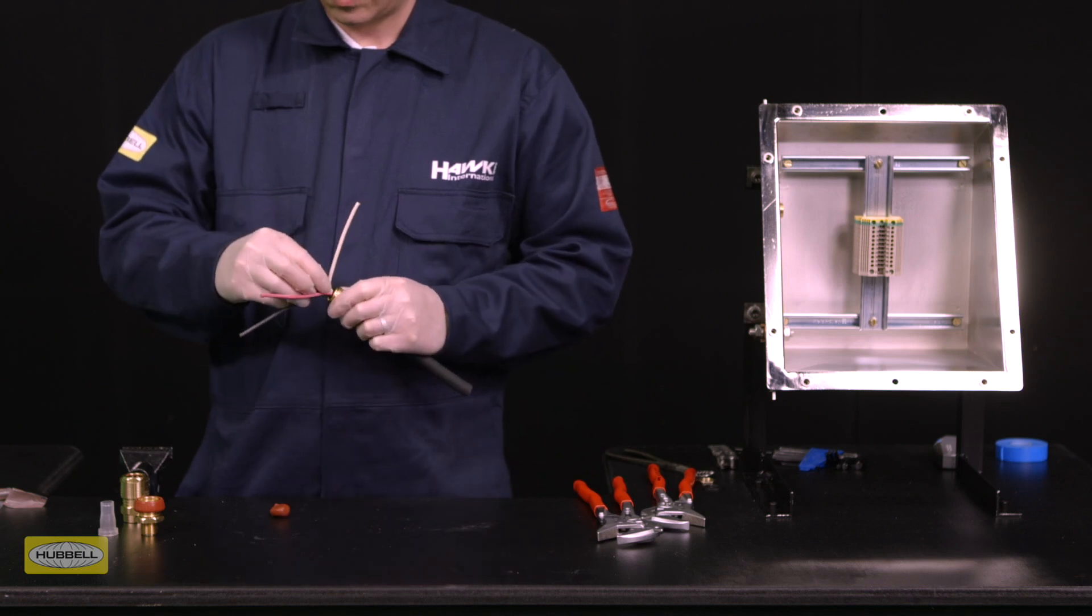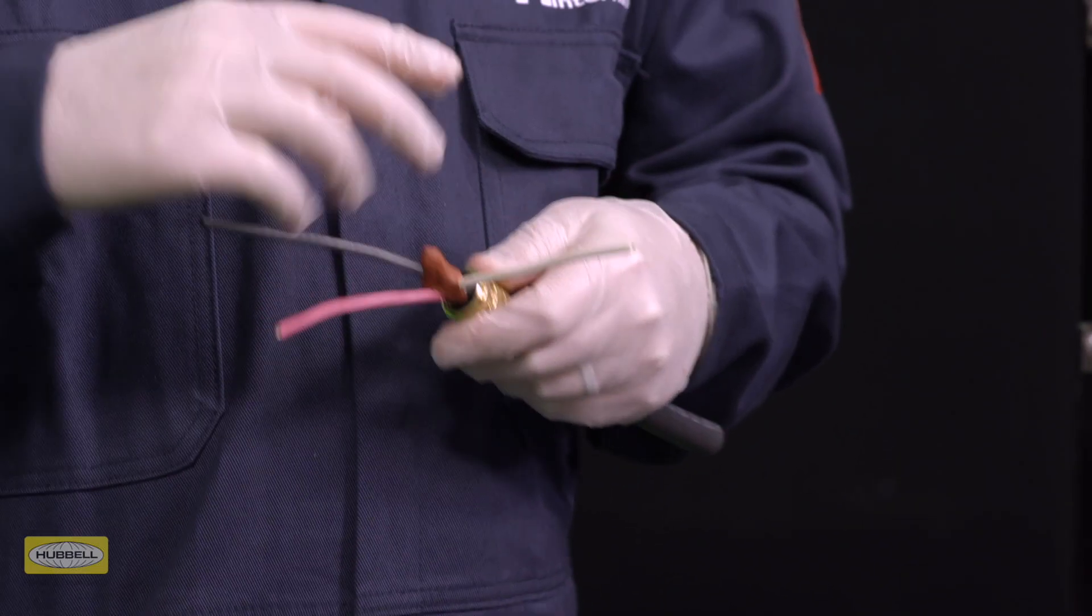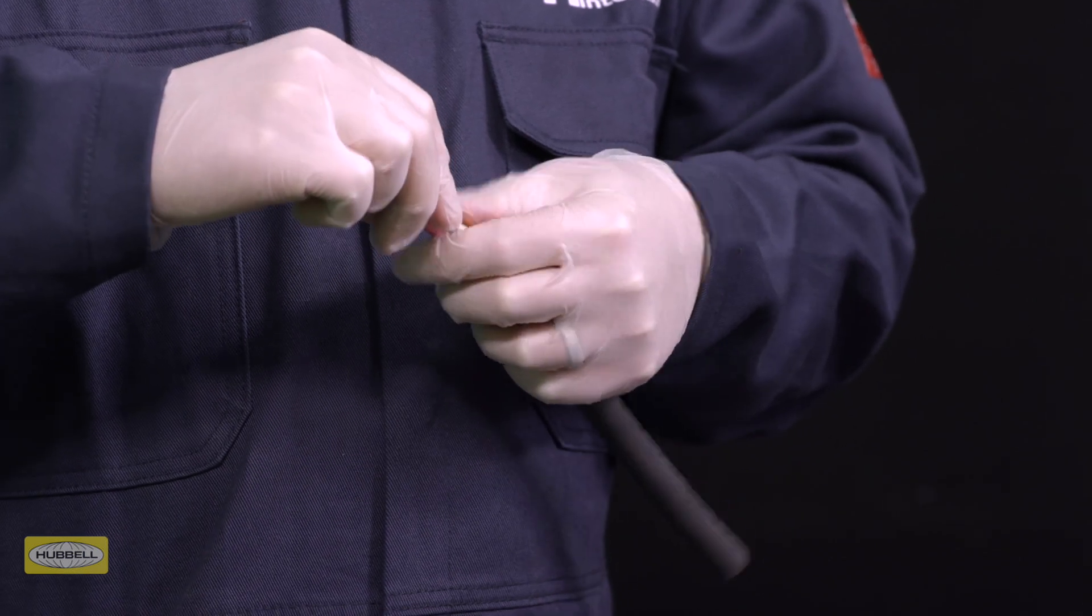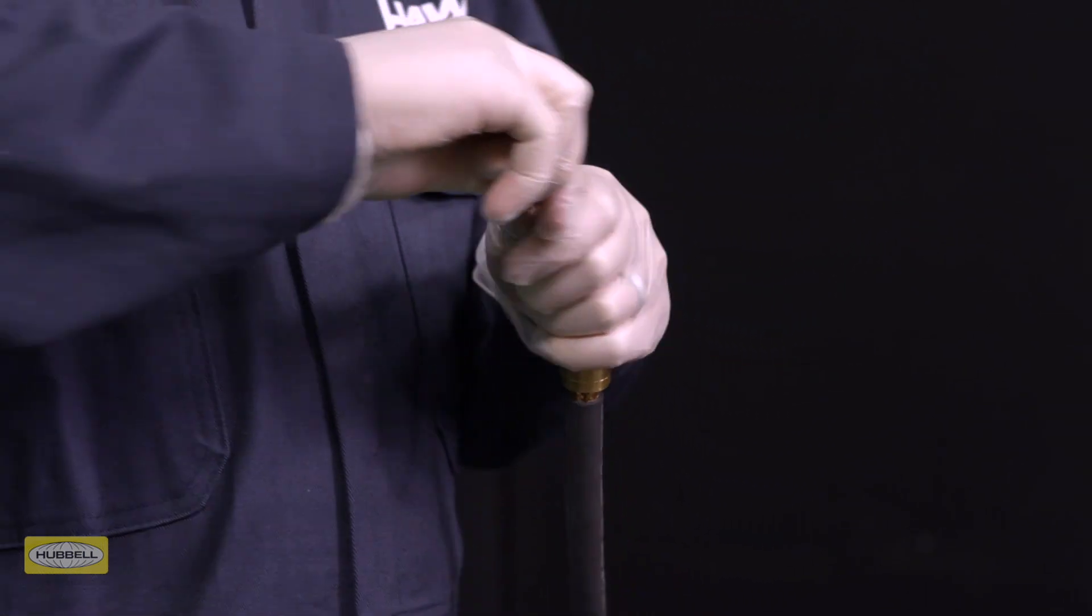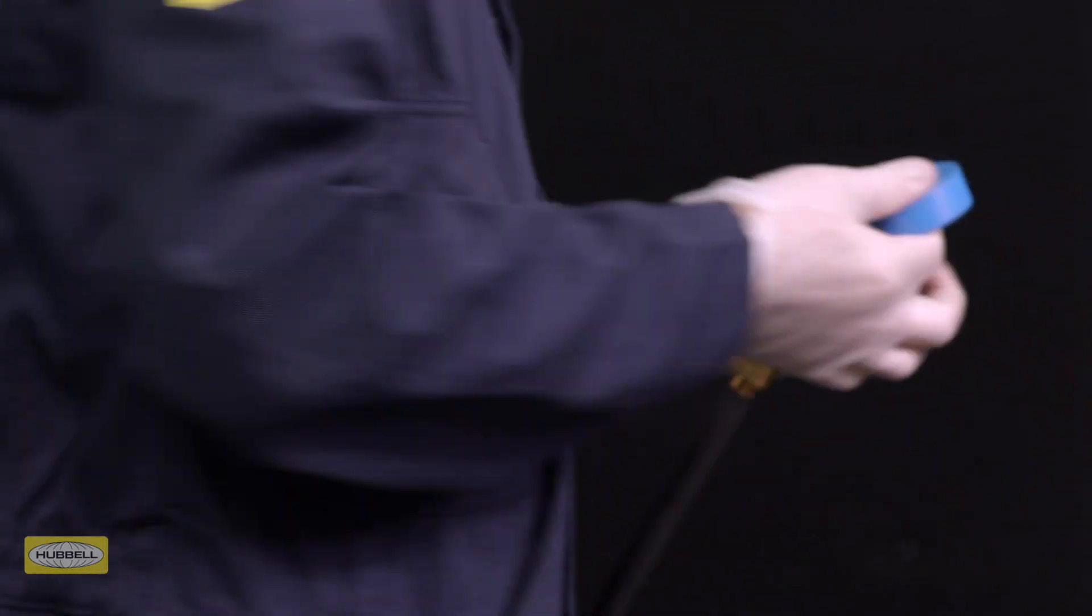Spread the cable cores and pack the compound between the cores. A cylindrical shape is the best way to ensure that the compound is effectively packed between the cores.